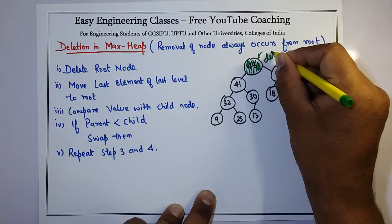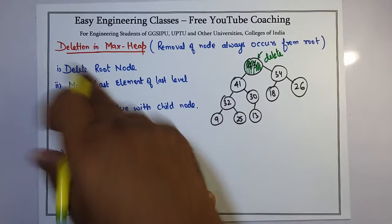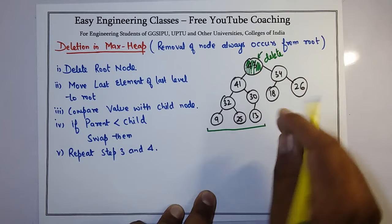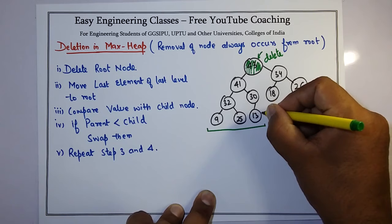The last level is here. Which node did we add? It's 13. This is the last element of last level. Move this to the root.